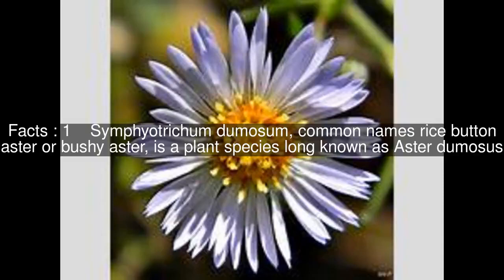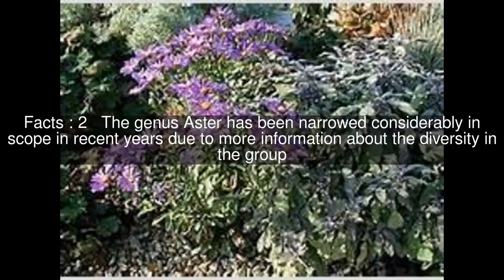Symphyotricum dumasum, common names ricebutton aster or bushy aster, is a plant species long known as Aster dumosus. The genus Aster has been narrowed considerably in scope in recent years due to more information about the diversity in the group.